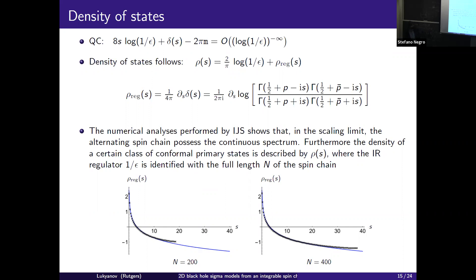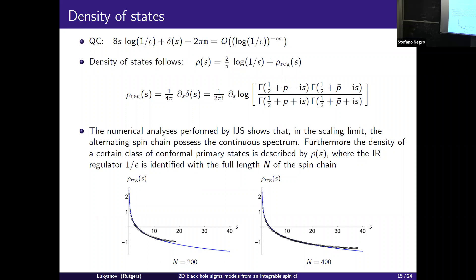The contributions of discrete and continuous states were discussed and corrected in the literature many times. The partition function is the sum of contributions from the continuous spectrum and the discrete states. Importantly, the discrete spectrum wave functions are localized near the tip, so an infrared regulator does not affect them. But doing the numerical calculation, one observes that this is not true — something is wrong with the density of states proposed from the mini-superspace formula.